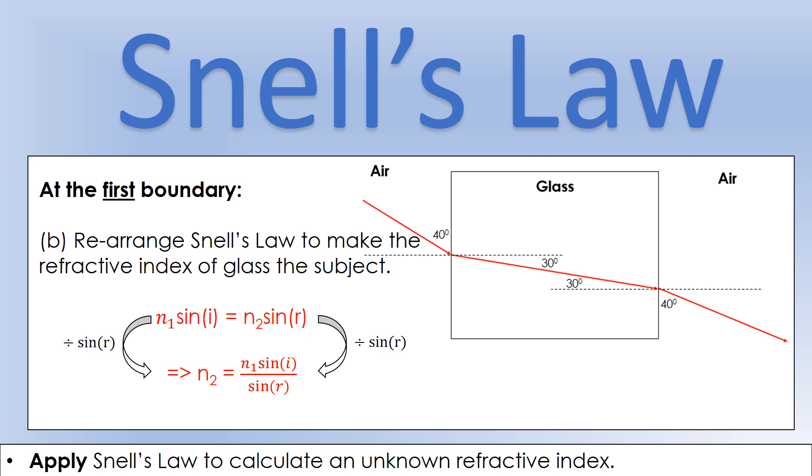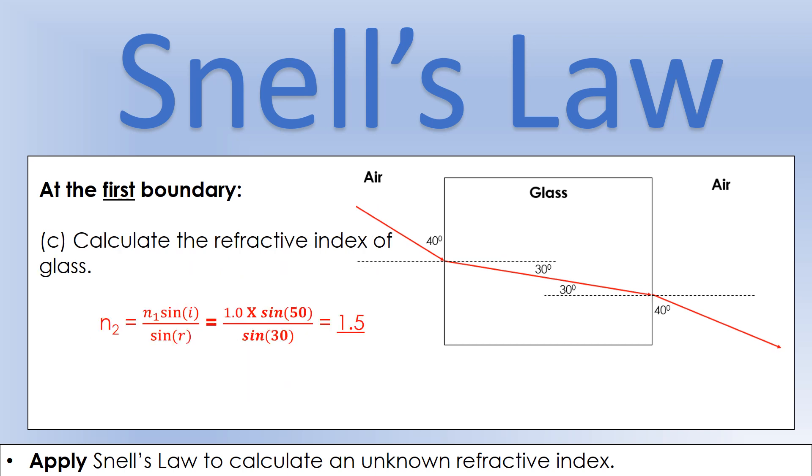We can plug our numbers in. The refractive index of air n1 was 1, sine i is sine 50, and sine r is sine 30. Put all those together and we get n2 is 1.5. Two significant figures would be appropriate for the answer because all of our data was two significant figures. That's how we calculate a refractive index using Snell's law.